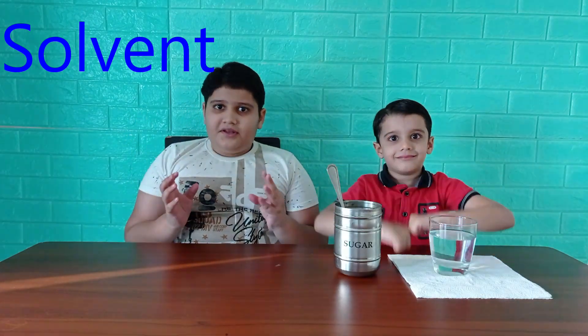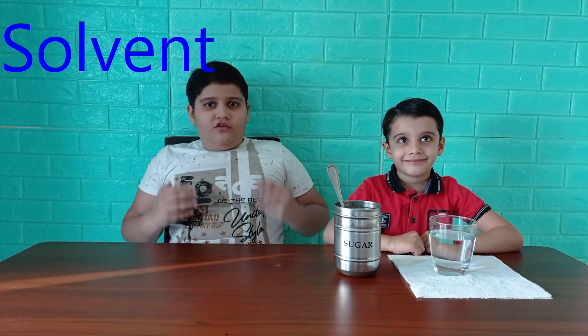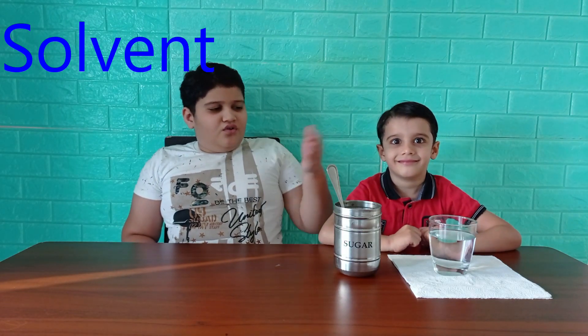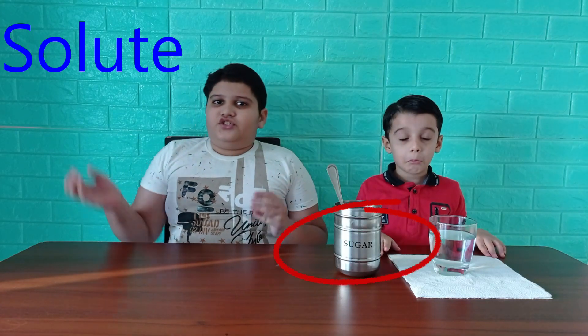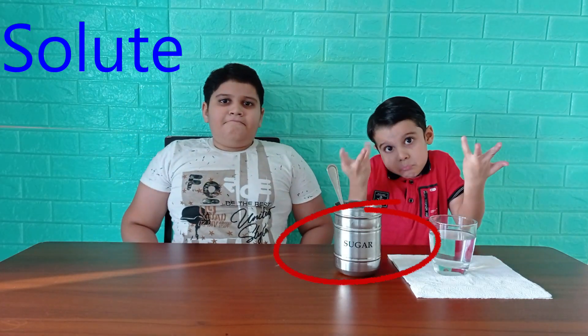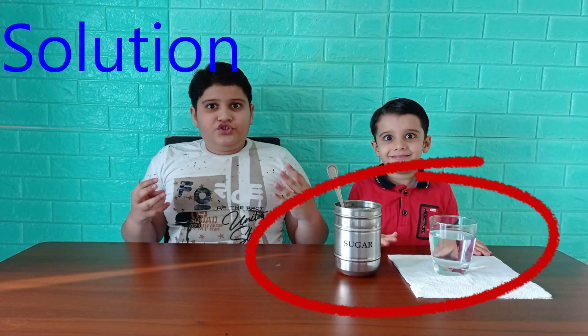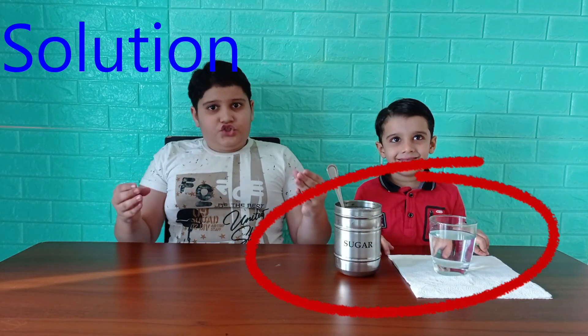Right now I'm going to tell you about three keywords. First, solvent — a solvent is the liquid that allows a solid to dissolve in it. For example, water. The next one is solute — a solute is the object that dissolves in a solvent.